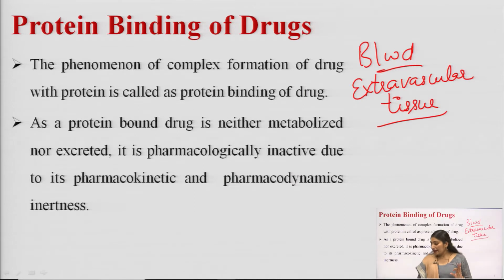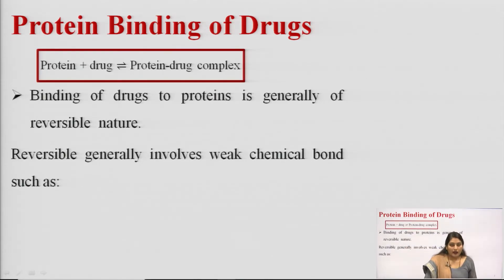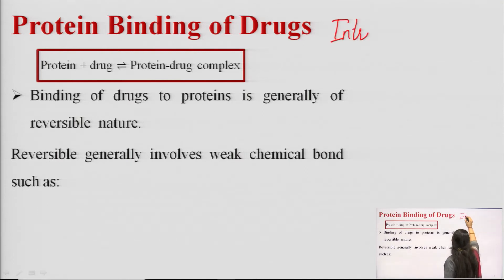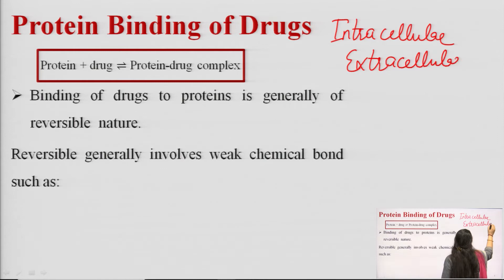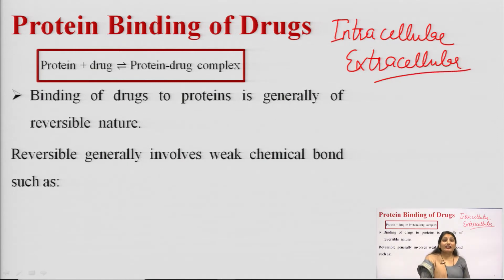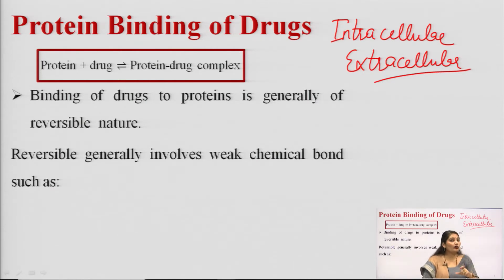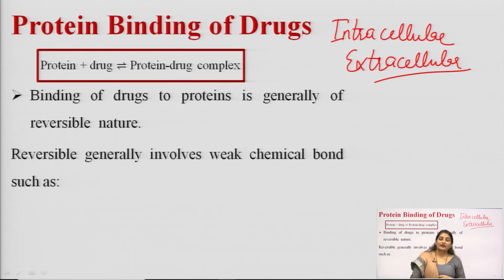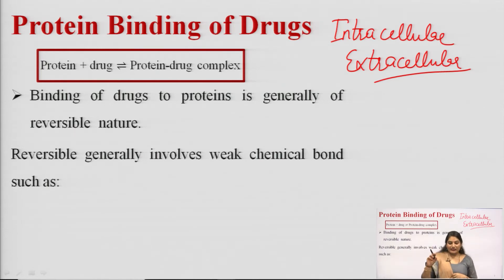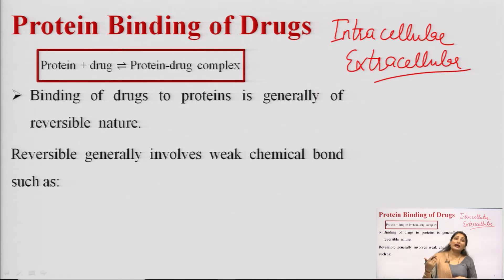Protein binding can be divided into two categories: intracellular binding and extracellular binding. Intracellular binding occurs when the drug is bound to a cell protein which may be the drug receptor. If a drug binds with a drug receptor, it will produce a pharmacological response or therapeutic effect. These receptors to which the drug binds are called primary receptors.